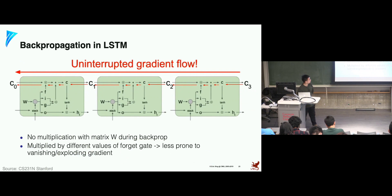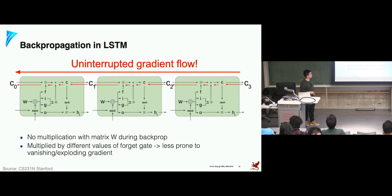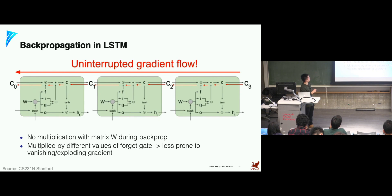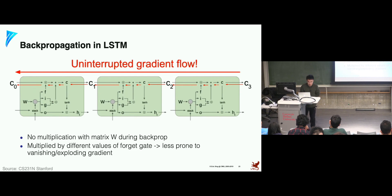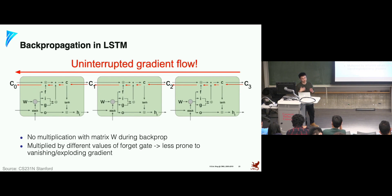With this LSTM architecture, we can show that during backpropagation there is no repeated multiplication by the weight matrix W. There is a pathway for backpropagating the gradient through multiple steps, where the only multiplication is by the different values of the forget gates. Because these forget gates have different values, we are less prone to vanishing or exploding gradients. This is the high-level intuition of LSTM — we add different gates to each step's computation and build a pathway to backpropagate gradients without repeatedly multiplying the same W.